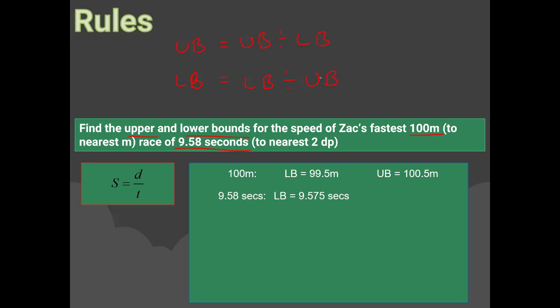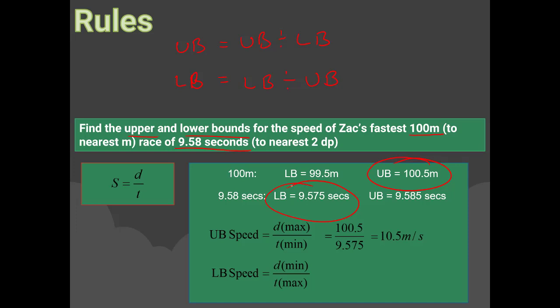For the upper bound speed: divide upper bound distance by lower bound time — 100.5 ÷ 9.575 — giving approximately 10.5 metres per second. For the lower bound speed: divide lower bound distance by upper bound time — 99.5 ÷ 9.585 — giving approximately 10.4 metres per second.